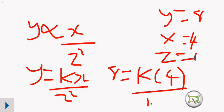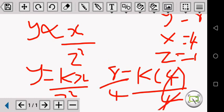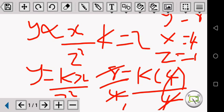1 times 8 is just 8. So here you divide both sides by 4, even this side by 4. You cancel, cancel this one. K is equal to 4 into 1. 4 into 8 is 2. The value of K is 2.